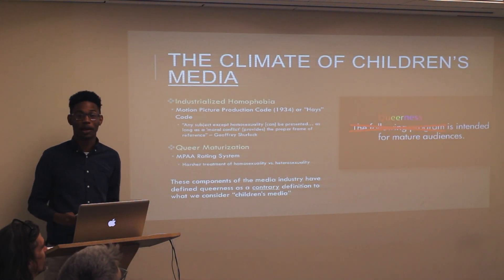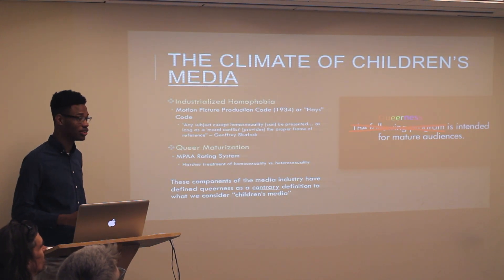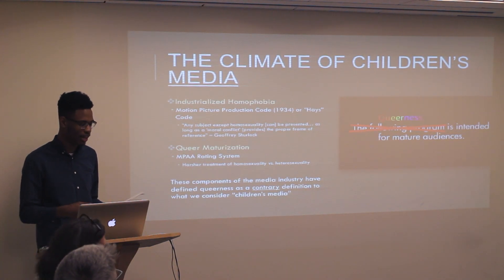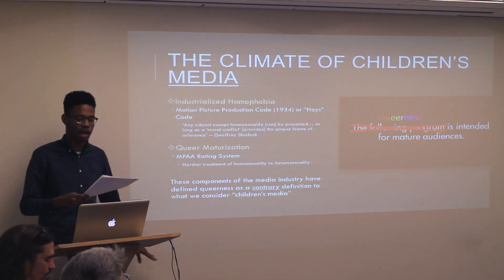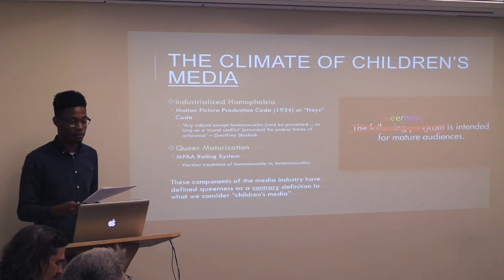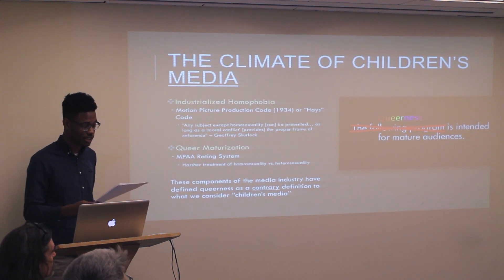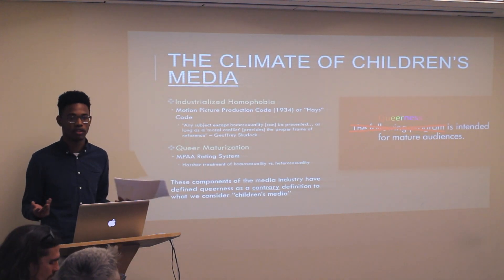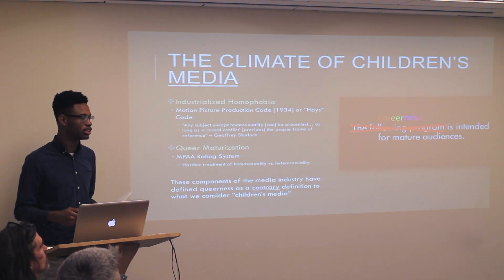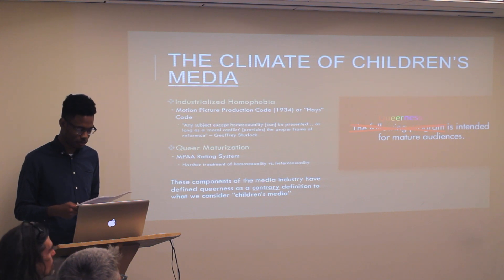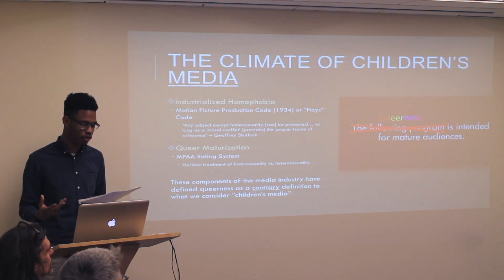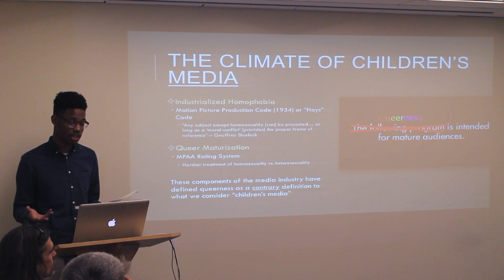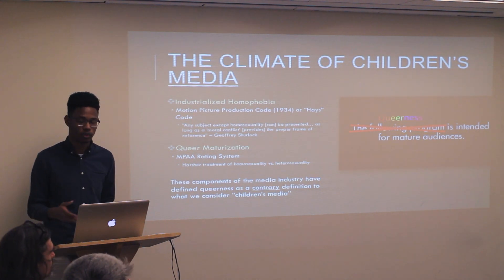Before I actually get into talking about what queer ambiguity is and how it is utilized in children's cartoons, I think it helps to first contextualize this conversation by briefly introducing the climate of children's media as it stands today. Contemporary children's cartoons are shifting the paradigm of queer representation, and what established that paradigm are attitudes of homophobia and heteronormativity that have pervaded the industry for a very long period of time. Perhaps marking the genesis of such are regulations like the Motion Picture Production Code of 1934, or the Hays Code, which imposed harsh regulations against the portrayal of queer homosexual subjects in film, consequently marking homophobia as an intrinsic moral value of the media industry. Since then, this industrialized version of homophobia has evolved into what I call queer maturization in media, where queer subjects and queer life are considered unsuitable for childhood viewers.